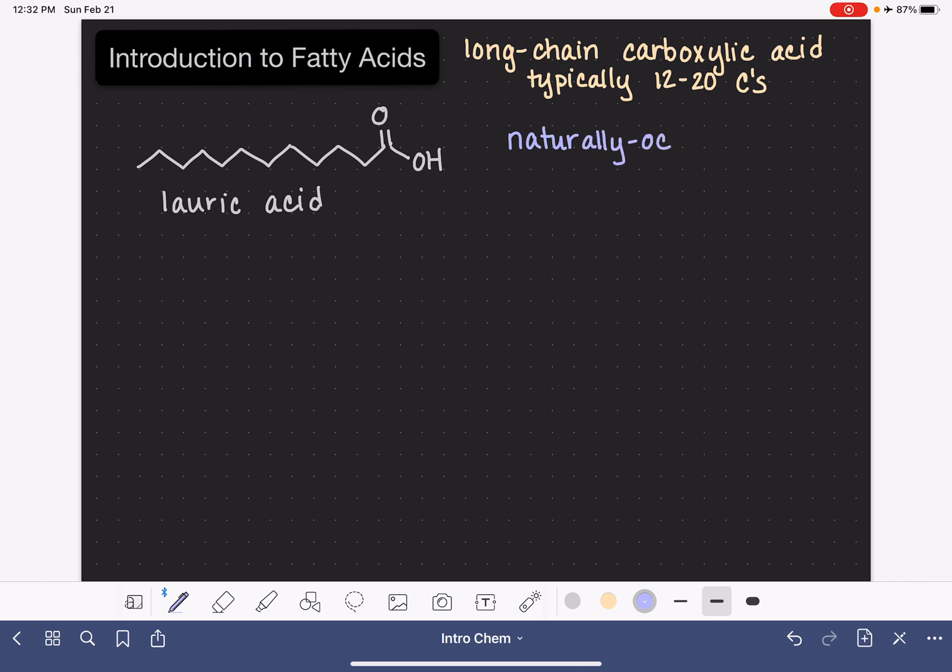Naturally occurring fatty acids have an even number of carbon atoms, so 12 or 14 or 16 or 18. This has to do with the way that they are synthesized in nature, two carbon atoms at a time.